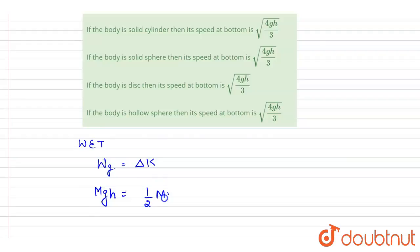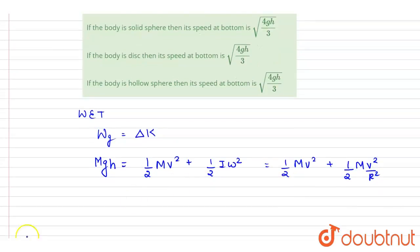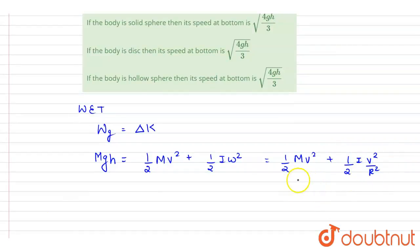If the mass is m and it came down by height h, then work done by gravity equals change in kinetic energy: mgh equals half mv squared plus half I omega squared. Substituting omega equals v by r, we get mgh equals half mv squared plus half I times v squared by r squared.